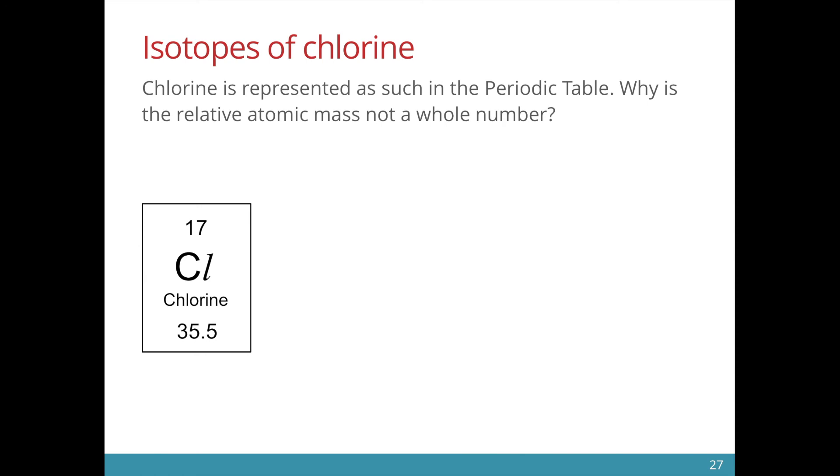It turns out that this number is actually an average value. In this world, there are chlorine-35 and chlorine-37 isotopes. But it turns out that 75% of the chlorine atoms on our planet is actually chlorine-35 while the remaining 25% is chlorine-37.